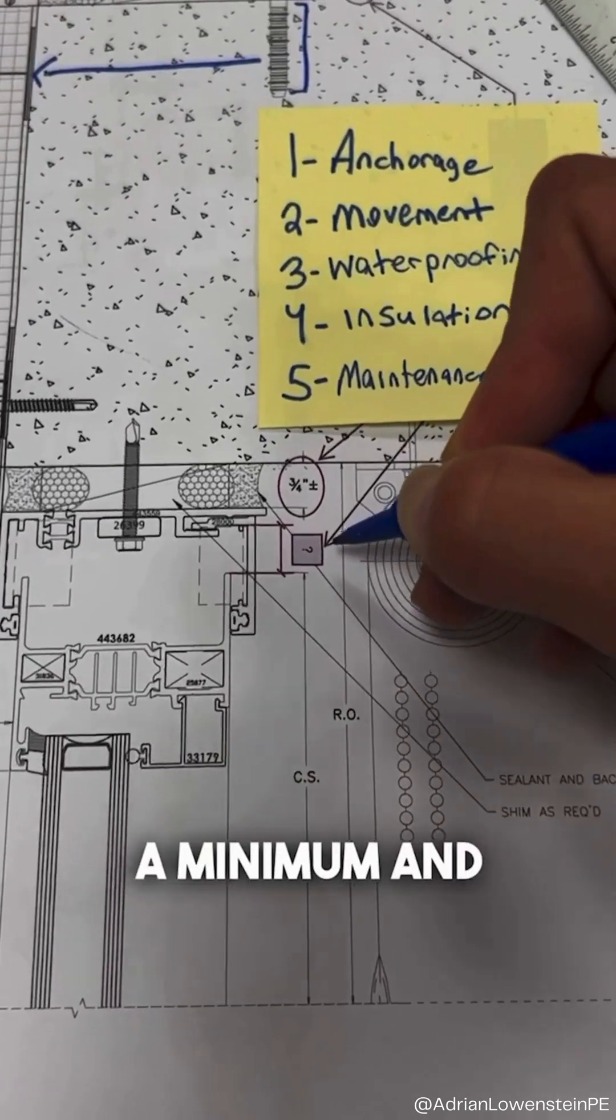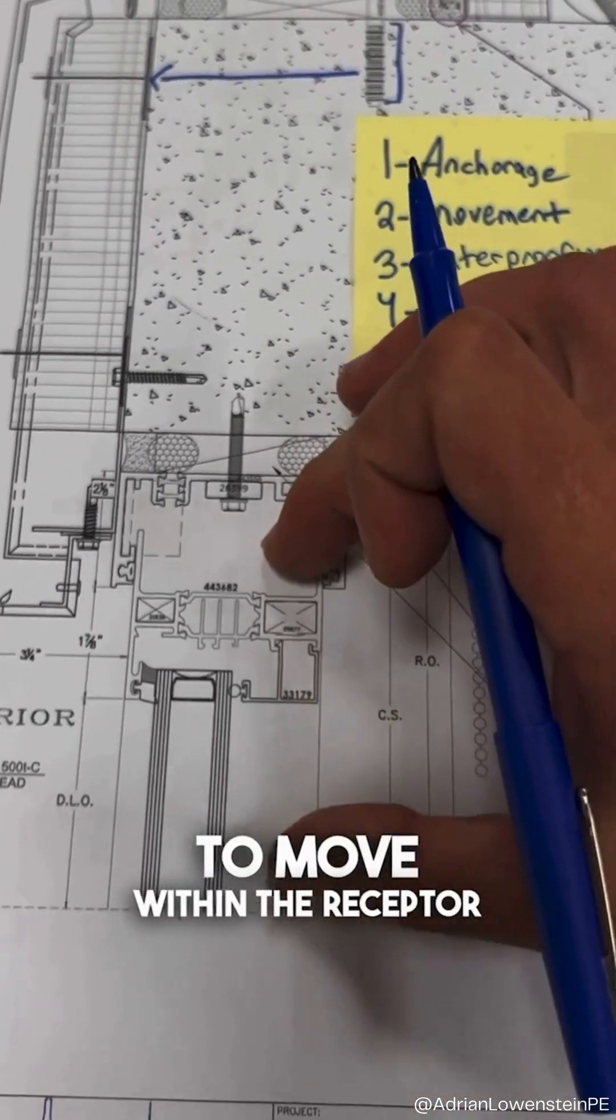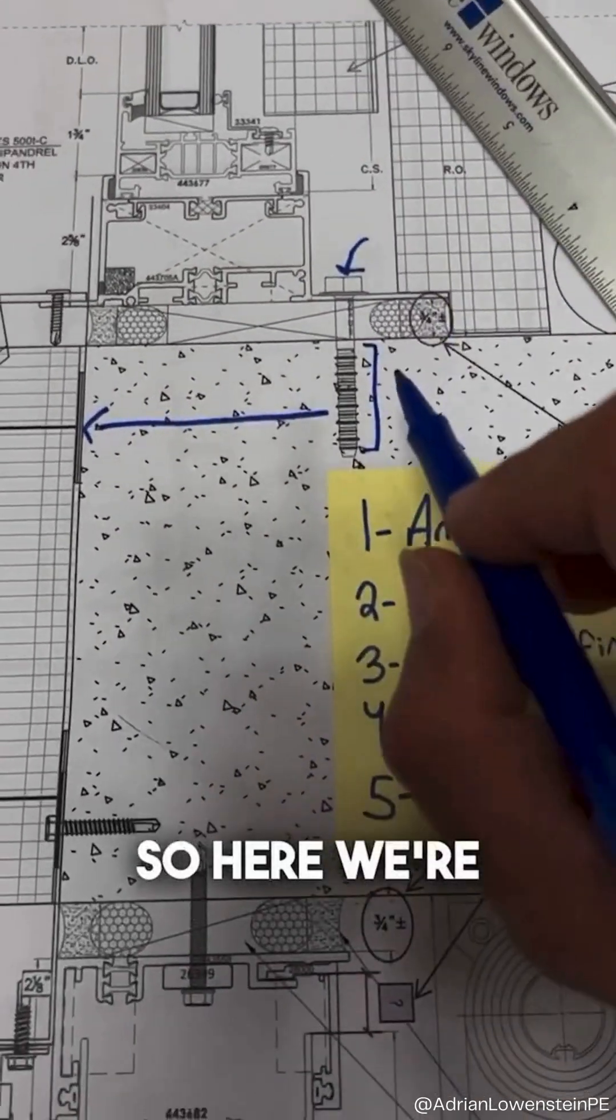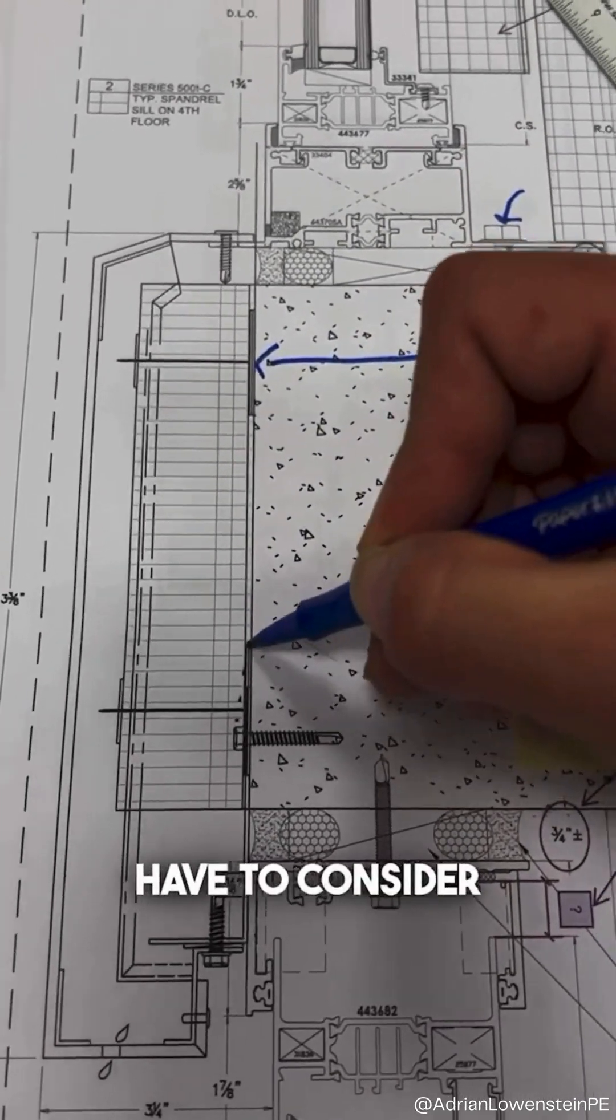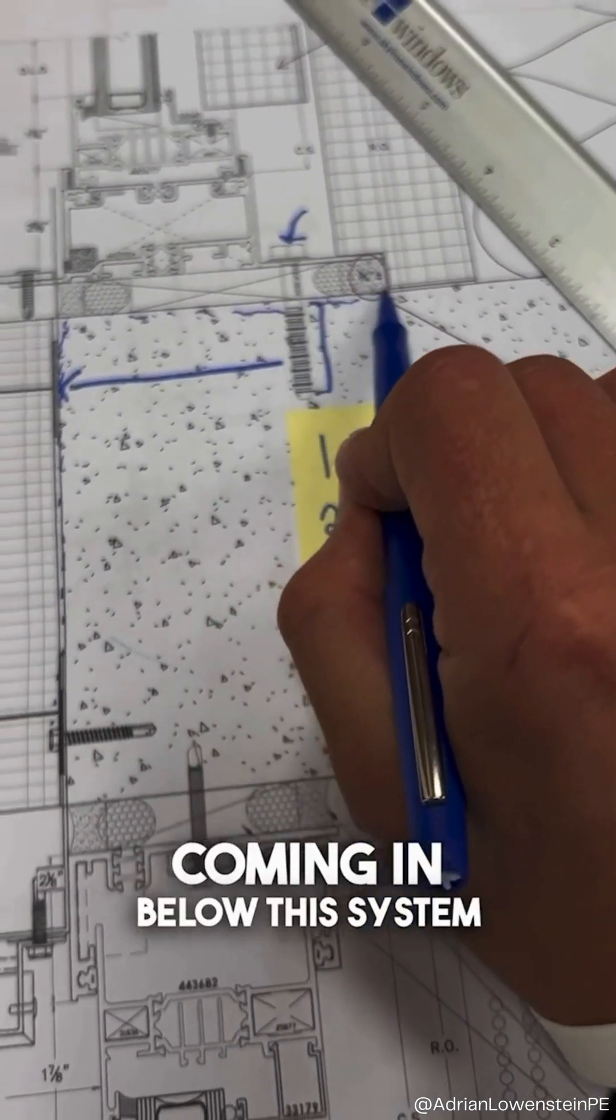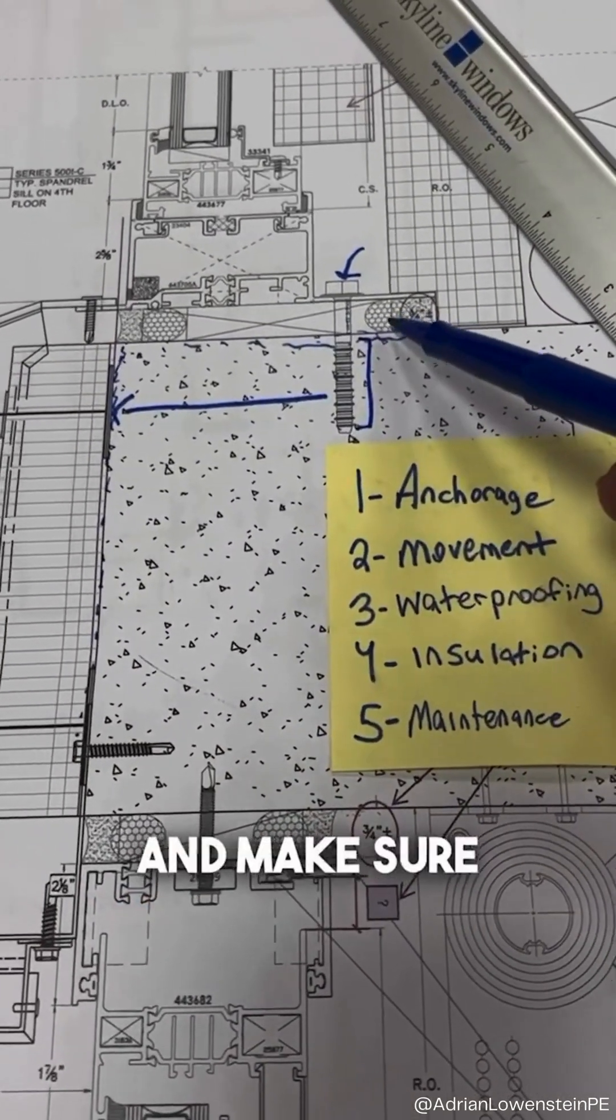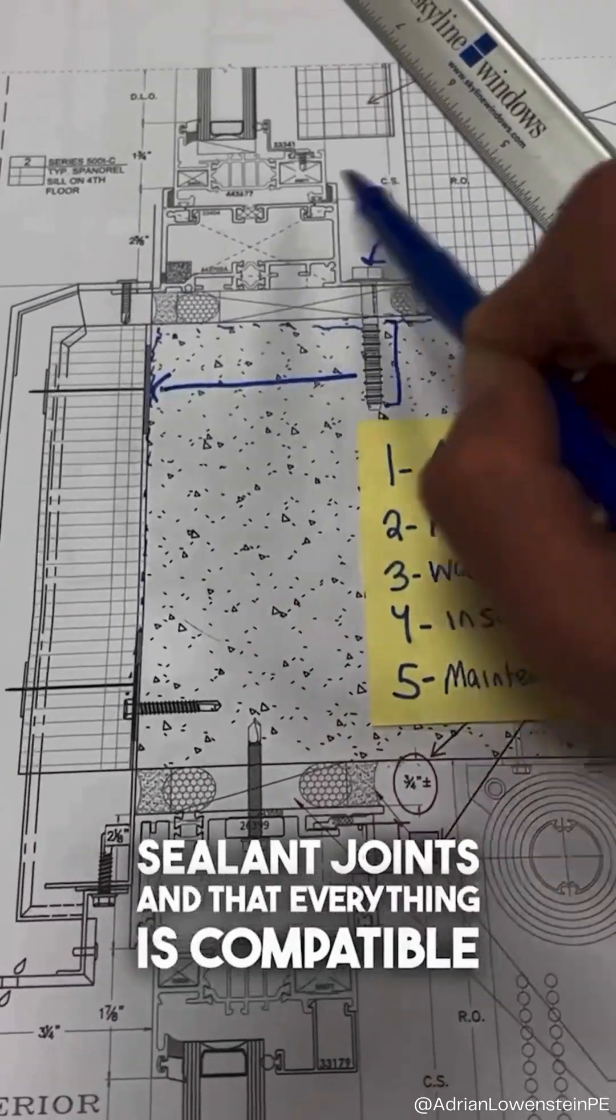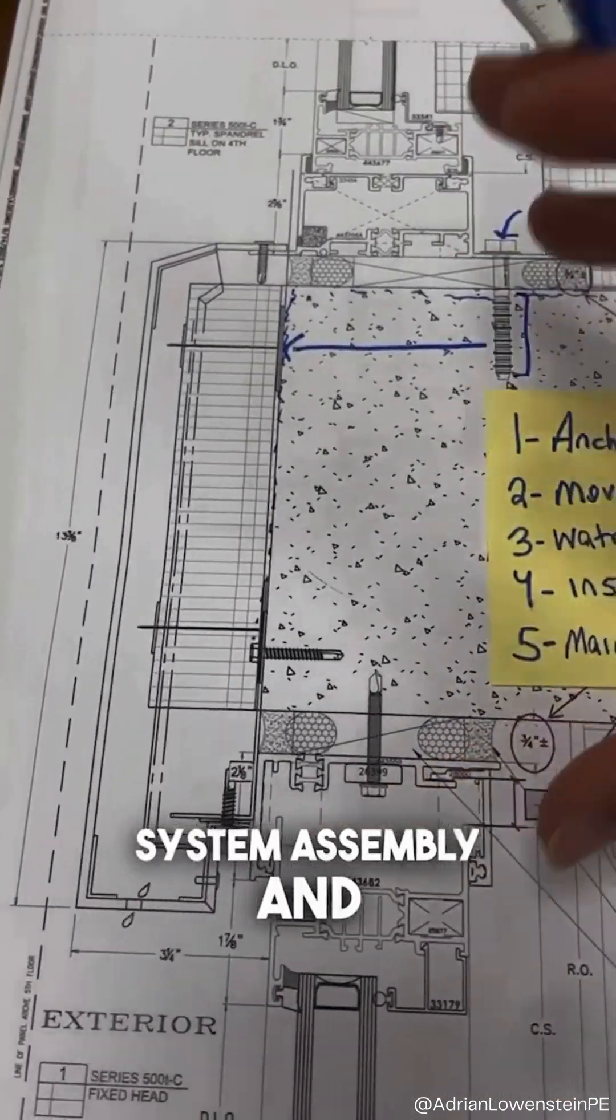Number three is your waterproofing. So here we're looking at items like our primary and secondary line of sealant. But also you have to consider your slab edge waterproofing coming in below this system. What contractor is going to own the waterproofing and make sure that it properly ties into your sealant joints and that everything is compatible to maintain a watertight system assembly and slab edge.